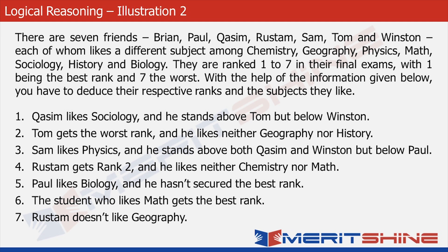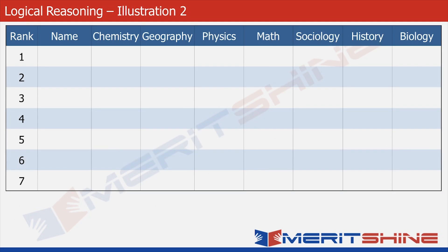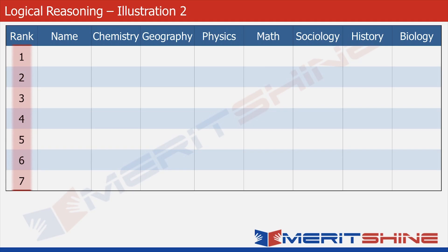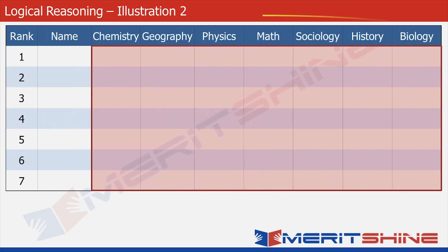Let's proceed with solving the problem now. We first need to create a table with seven rows and nine columns. The first column contains the ranks of the seven persons, the second contains the names, and the rest seven columns the seven subjects. So in each row, which corresponds to a particular rank-name combination, we will put a check against the correct subject and cross the rest of the cells. Let's start.